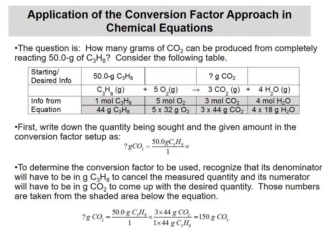It's the same conversion factor approach, just looking a bit uglier. What we're looking for is grams of CO₂. Our starting amount is 50 grams of propane — put it over one so it looks like a fraction. Grams of C₃H₈ goes in the bottom of the conversion factor, and grams of CO₂ goes on top. The numbers from the shaded area go in front of those units, and it tells us we can produce 150 grams of CO₂. We haven't violated conservation of mass — it turns out 100 grams of oxygen was also combined.